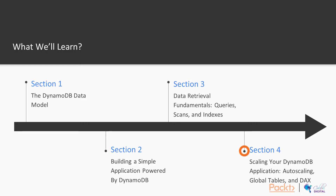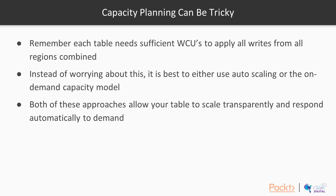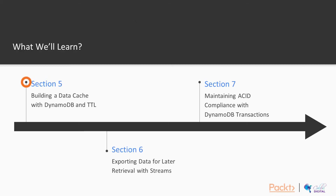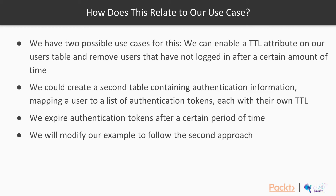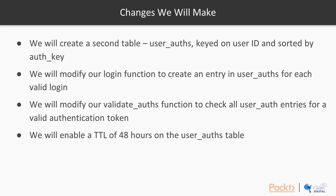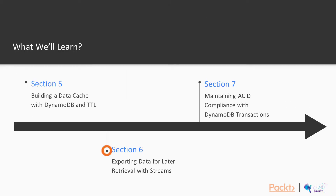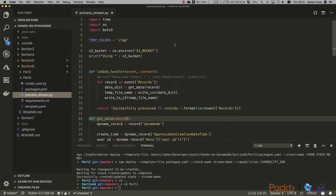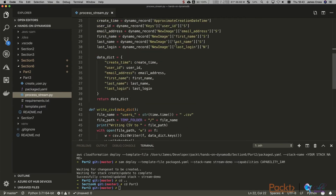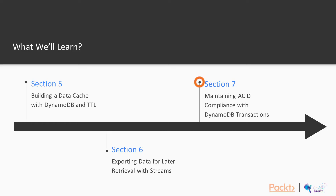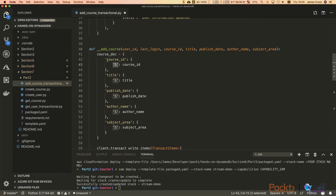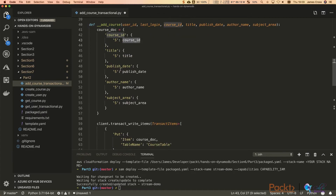We'll look at how we can scale out DynamoDB to build hyperscale web applications. Next, we're going to build a data cache with DynamoDB and leverage DynamoDB's TTL feature. Then we're going to look at how we can get data out of DynamoDB in real time using streams, and lastly, how we can create ACID transactions on DynamoDB. So plenty for us to focus on.